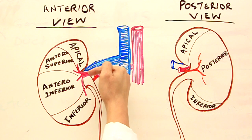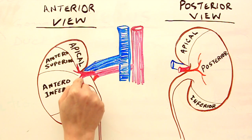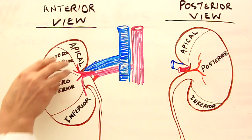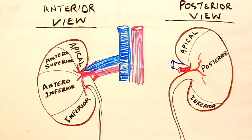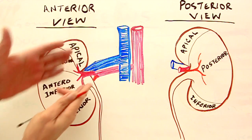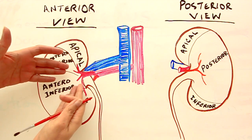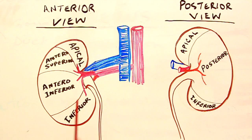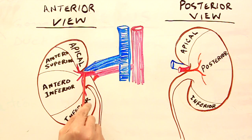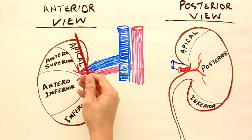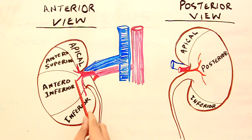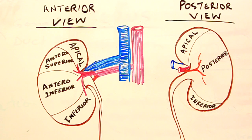The anterior division, once it has entered the kidney and reached the renal sinus — that space which receives the vessels — splits into four segmental arteries.